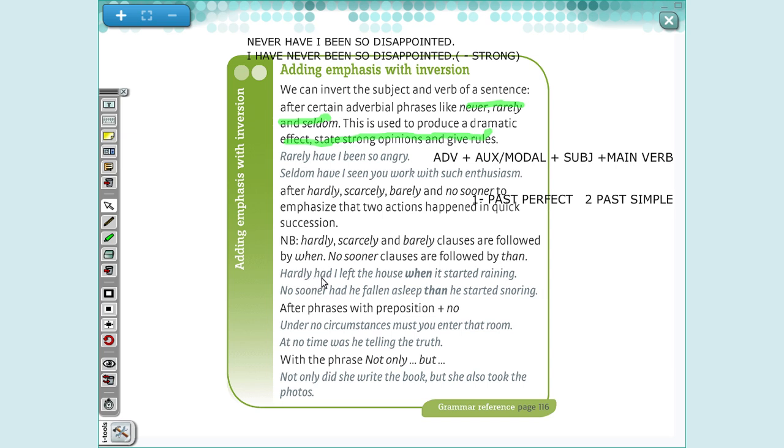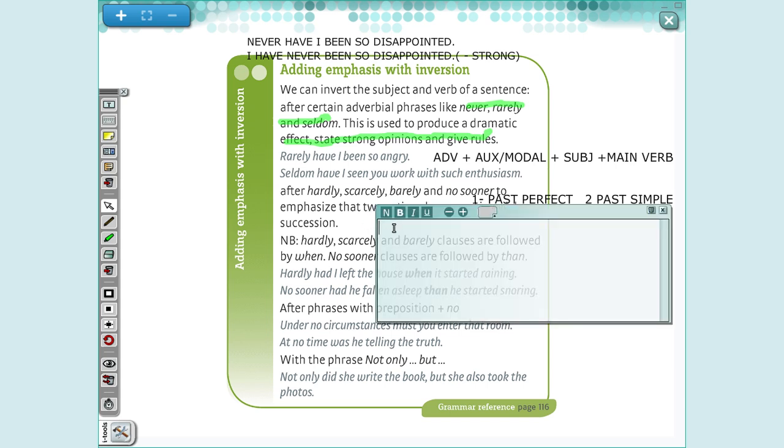Hardly had I left the house when it start raining. Let me write how should you create your sentence. So you are going to use hardly, scarcely, and barely, plus had, plus the subject, plus the verb in the third column, plus when, plus your past simple sentence. This is important to remember.